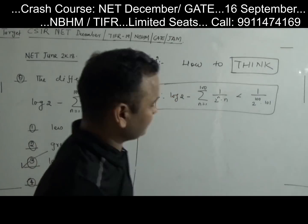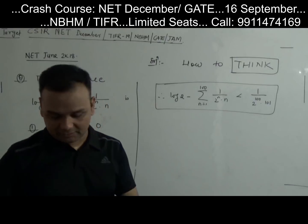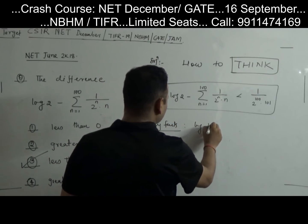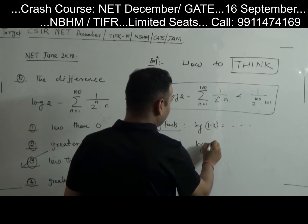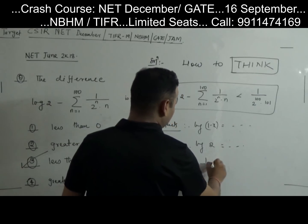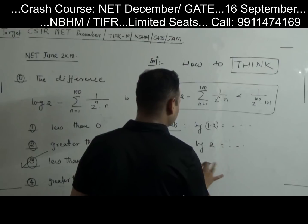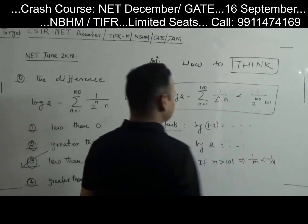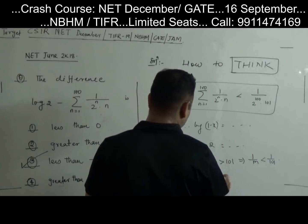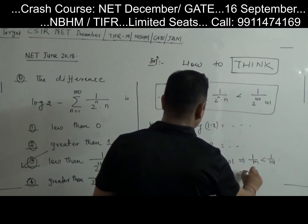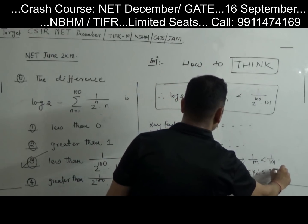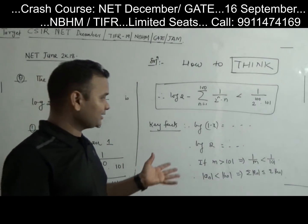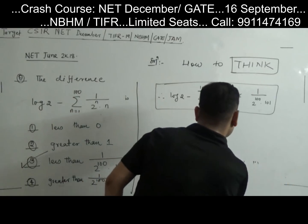So the question was not so tough. What are the key facts I used? Key fact 1: the Taylor series log(1−x) and how to get log 2. Key fact 2: how to express log 2 as a series. Key fact 3: if m > 101, then 1/m < 1/101. Key fact 4: if |a_m| < |b_m|, then the series of |a_m| is less than the series of |b_m|. These are the four key facts used.